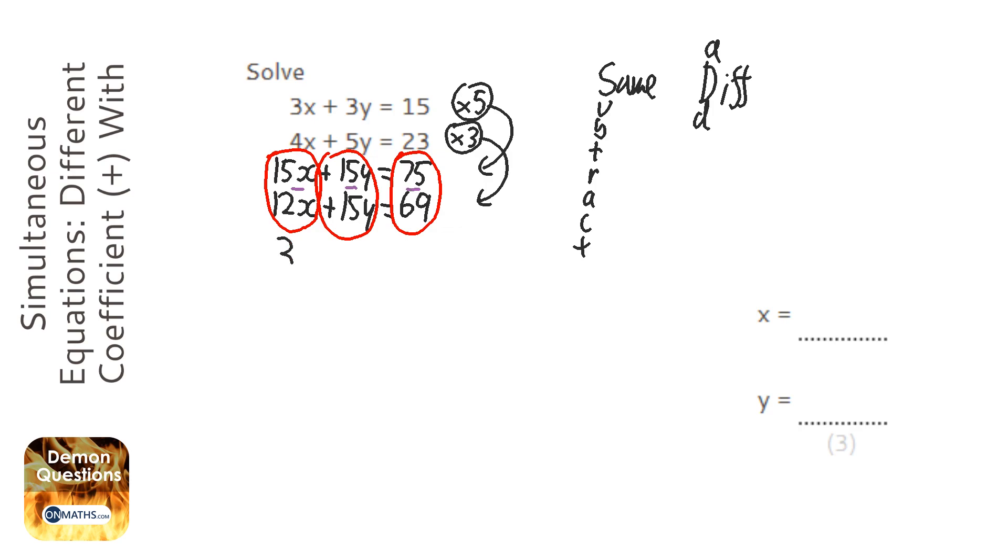So 15x take away 12x is 3x. 15y take away 15y is nothing, and if you end up with something, you've done something wrong because you need to end up with nothing. 75 take away 69 is going to be 6.